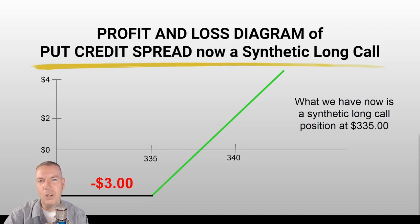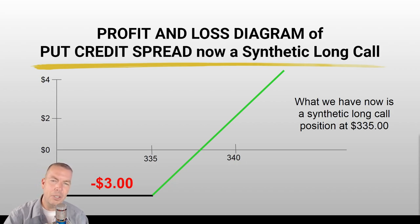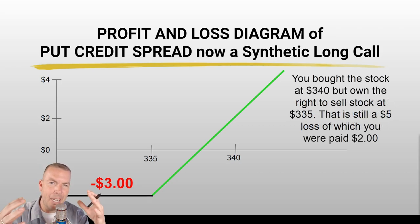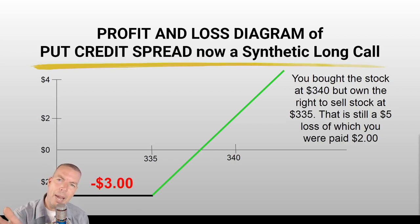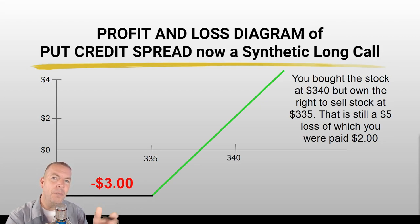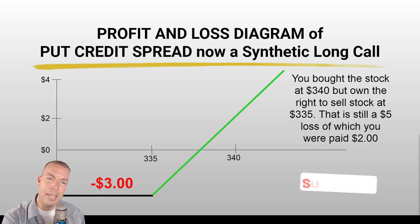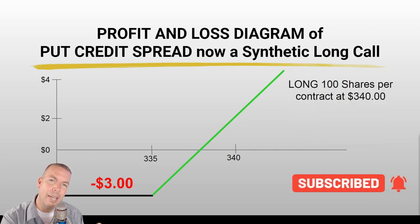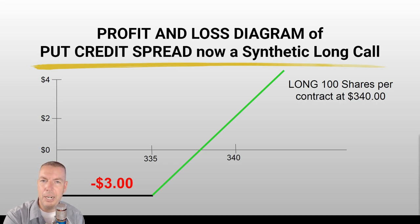If you're familiar with the risk profile of a long call option, what it looks like here is that we bought the 335 call and paid a three dollar debit for it. It acts like a long call option, but we call it a synthetic long call because it's done with a long put and long stock. We still own the right with that 335 put — the right to sell that stock at $335. So if you bought it at 340 and can sell it at 335 that's still a five dollar loss, but we were already paid two dollars. Also, our risk profile is now unlimited to the upside because we are long those 100 shares of stock, and we're no longer capped off at that 340.